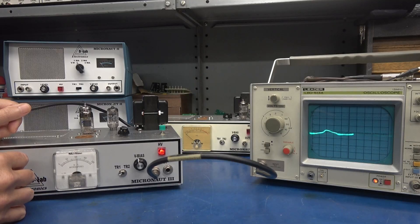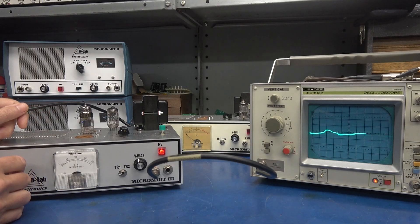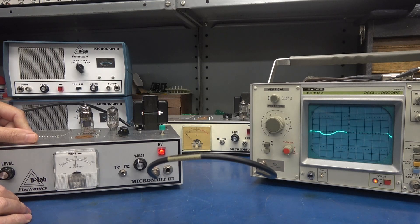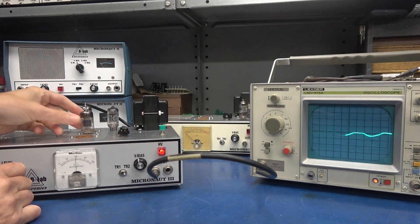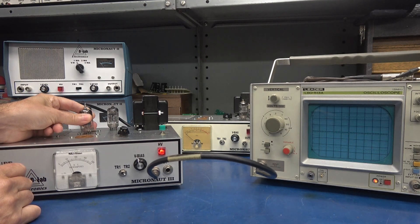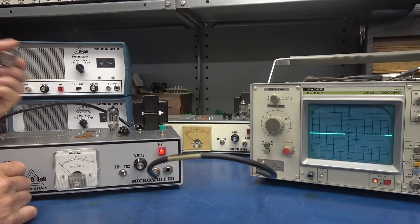Now you would not need a scope to detect this problem, but this just gives you a visual. There's the other triode. So those are not usable tubes, especially for a preamp.